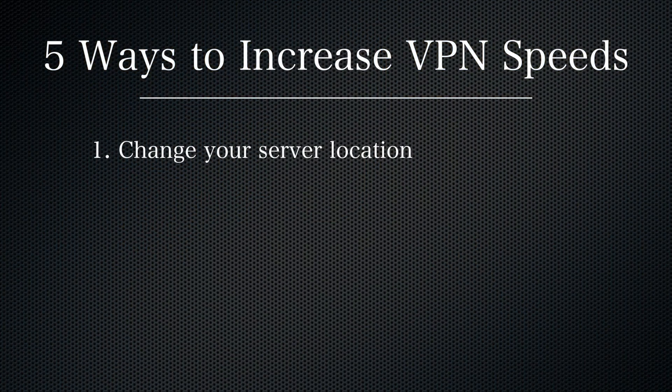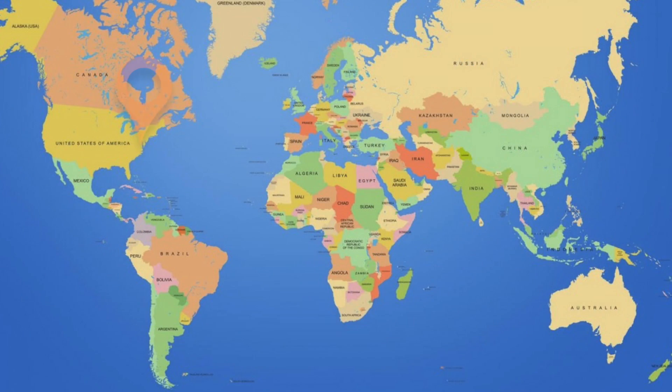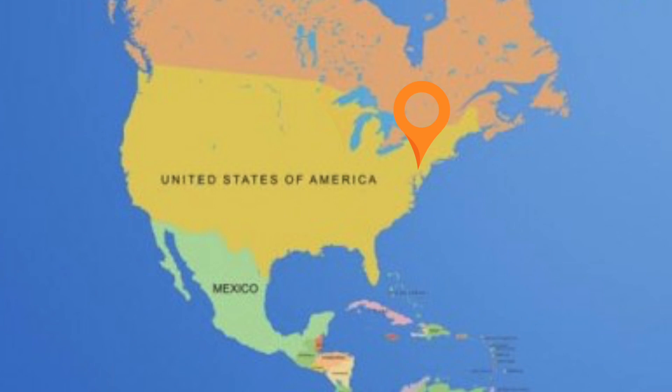Number one, change your server location. Almost every VPN service gives you the option to change which server you're connecting to in the world. Let's say you're currently in New York and your VPN is connecting to a server in Australia. By simply changing to a server that is physically located closer to your geographic location, in this case, let's say Chicago, logistically your speed should increase, even if ever so slightly. The general rule of thumb is that unless you're trying to spoof your location to a specific country, connect with the closest available server for the fastest speeds.